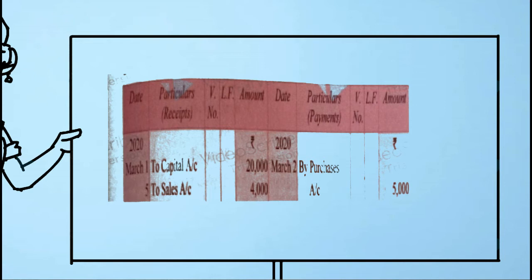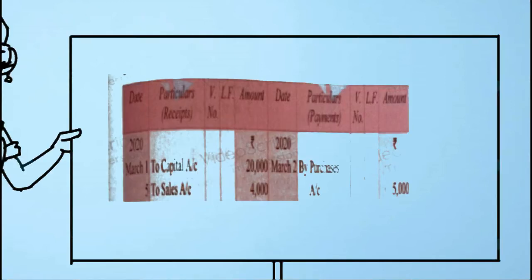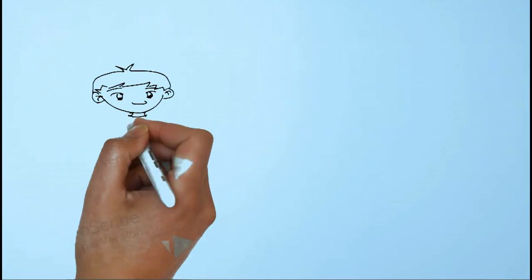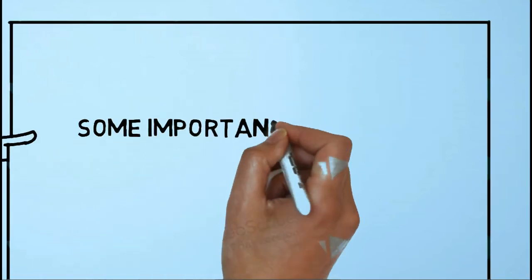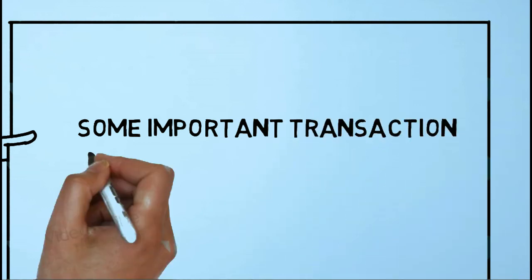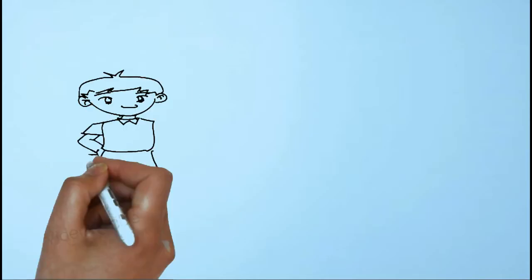So we will write 50,000 under the cash column of the cash book. This is recorded while keeping the general entries of respective transactions in mind. Now you all have understood how to make a cash book, so it's time to learn some important transactions of cash book. First one: contra entry.